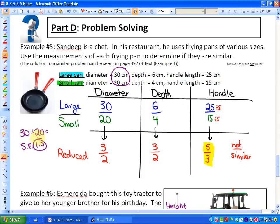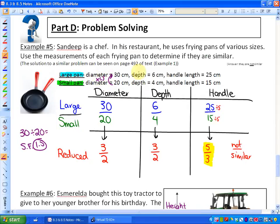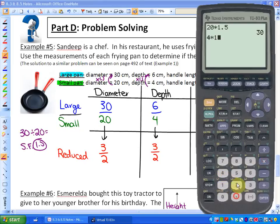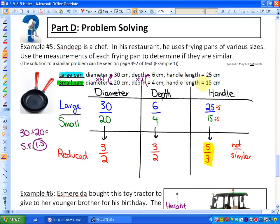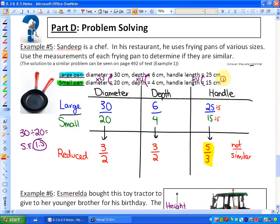The question is, if I take all of these, if I do small pan times 1.5, I get 30, so that works. If I take the depth and times that by 1.5, will I get 6? Is 4 times 1.5 equivalent to 6? Yes. And the last thing, if I times the handle length by 1.5, is 15 times 1.5 equivalent to 25? That answer is no. So any way that you do this, you find out that the handle is not proportional to the other parts of the pans.